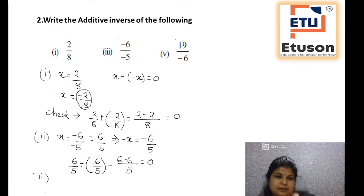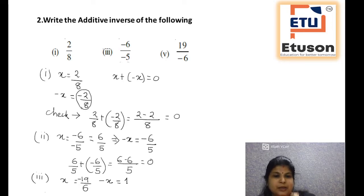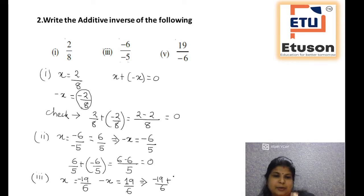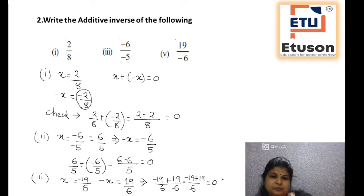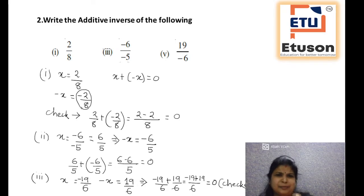Similarly for bit 3: x is equal to minus 19 by 6. So minus x will be equal to 19 divided by 6. To check: minus 19 plus 19 divided by 6 — minus 19 plus 19 is equal to 0. Every time when you are writing the additive inverse, you can check it using x plus minus x equals 0. These are very simple — you can solve it in a fraction of a second.